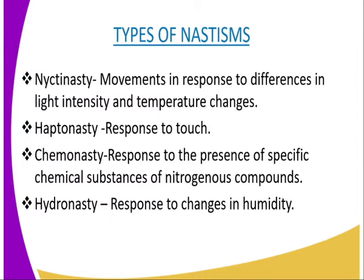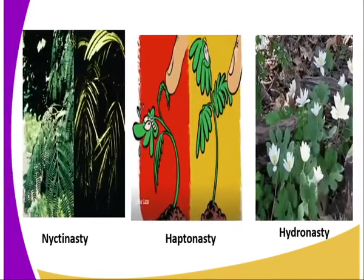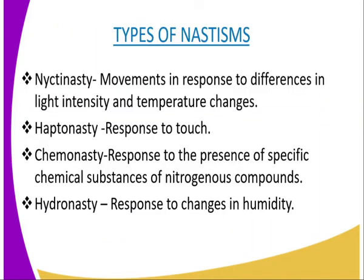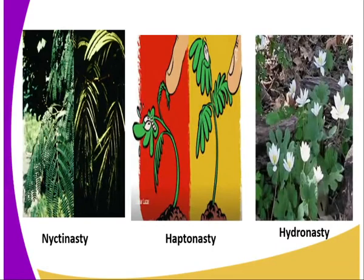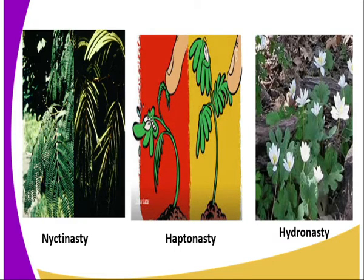In photonasty, flowers open in the presence of light and close in its absence. If the response is specifically for temperature changes, then it is called thermonasty, as in flowers of some plants that open with an increase in temperature and close with a decrease in temperature. The second type of nastics is haptonasty, which is the response to touch. The touch reaction in plants is most dramatic in the sensitive plant, for example Mimosa pudica, as represented by our diagram on screen. The leaves of this plant will close rapidly if they or their stem are touched, and a sudden change of temperature will also initiate a response.